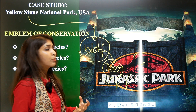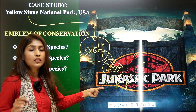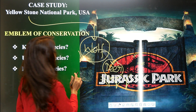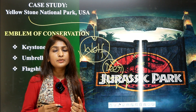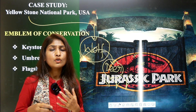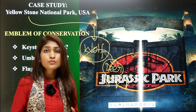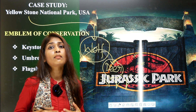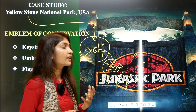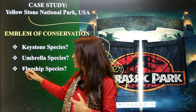It was restored to its previous state — in fact, this made it possible for filming of Jurassic Park. Connecting this to the tiger: India holds more than 70% of the world's tigers, and if the tiger goes extinct, India might face the same situation the USA faced with Yellowstone. Now we can understand and define the keystone species, umbrella species, and flagship species.